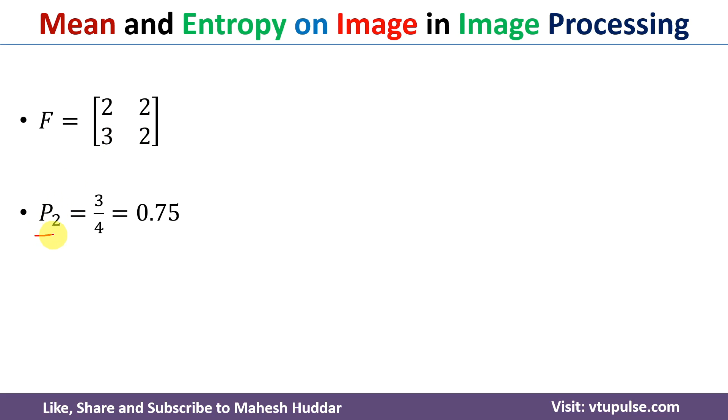So the probability of the pixels with value 2 is 3 pixels out of 4. So 3 divided by 4, which is equivalent to 0.75.